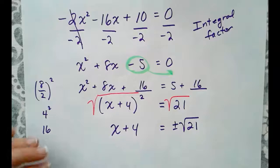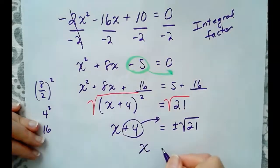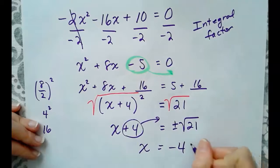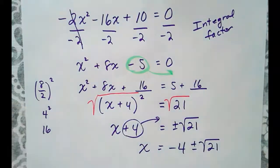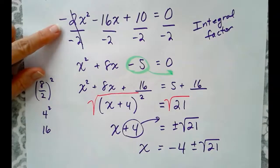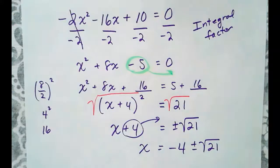From there, we need to move the 4 from the left to the right. x equals -4 plus or minus the square root of 21. Those are our two solutions for -2x² - 16x + 10 = 0. Solving by completing the square.